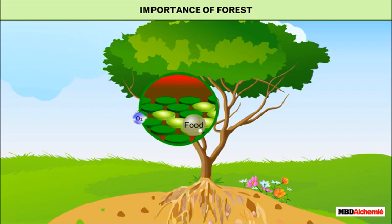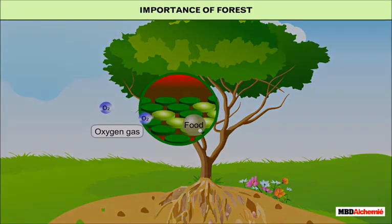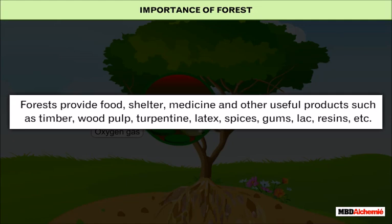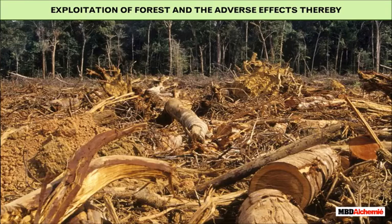Forests are useful in controlling global warming, as plants use carbon dioxide from the air for photosynthesis and help keep the level of carbon dioxide under control. Forests provide food, shelter, medicine, and other useful products such as timber, wood pulp, turpentine, latex, spices, gums, lac, and resins.